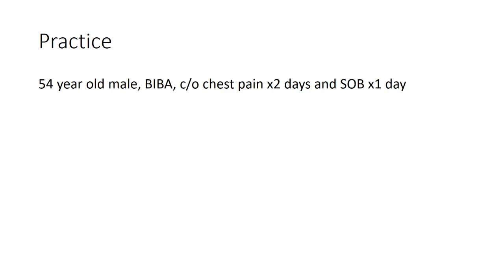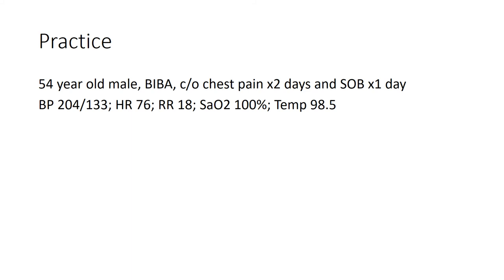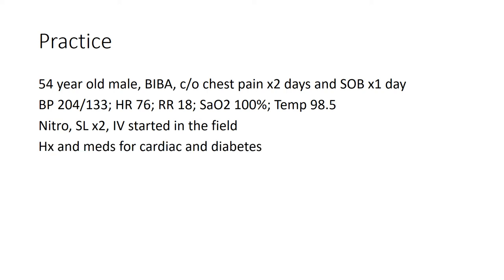Now it's your turn to practice. Here is a given scenario. A 54-year-old male brought in by ambulance complains of chest pain for two days and shortness of breath for one day. Blood pressure is 204 over 133, heart rate of 76, respiratory of 18, SAO2 of 100%, and temp 98.5. He was given nitro sublingual twice, and an IV was started in the field. History and meds for cardiac and diabetes. What is his ESI score? You may pause the video and try to work this out on your own. If you answered an ESI Level 2, you would be correct.